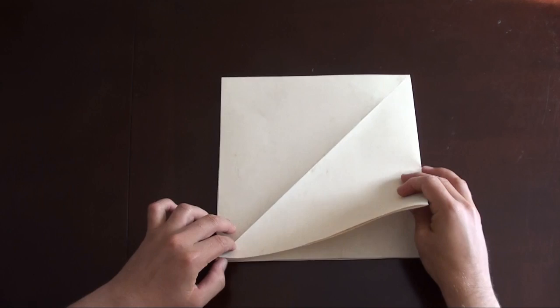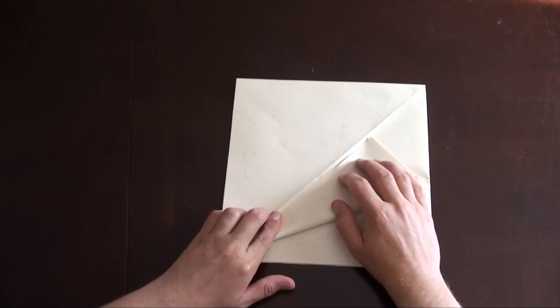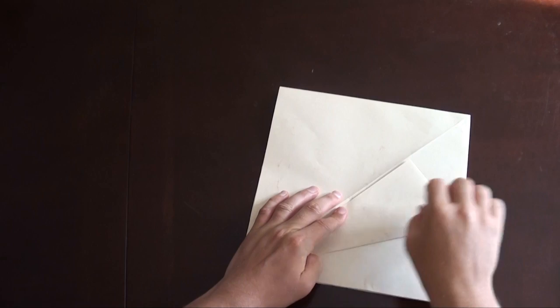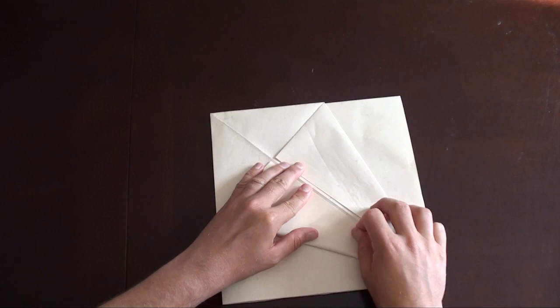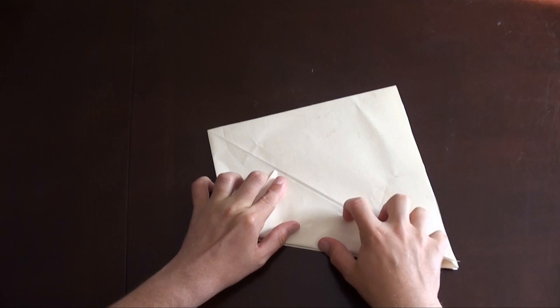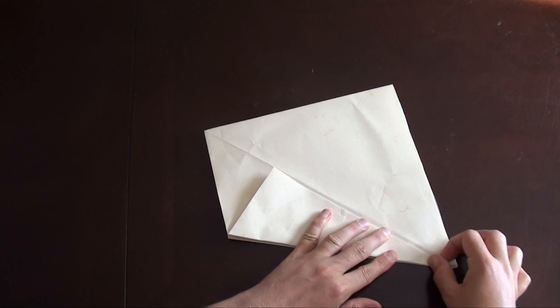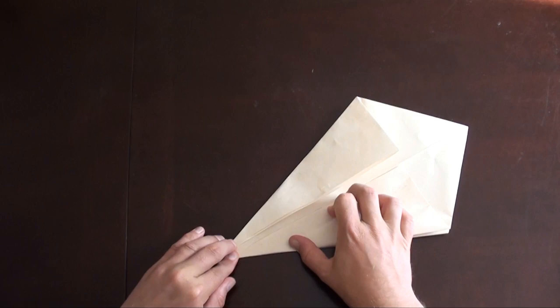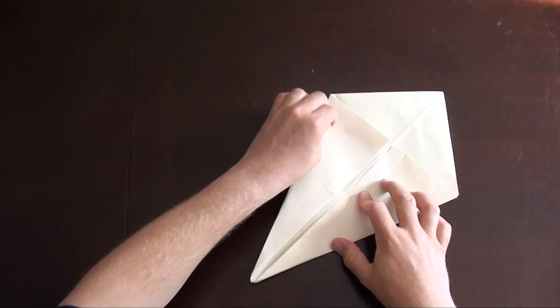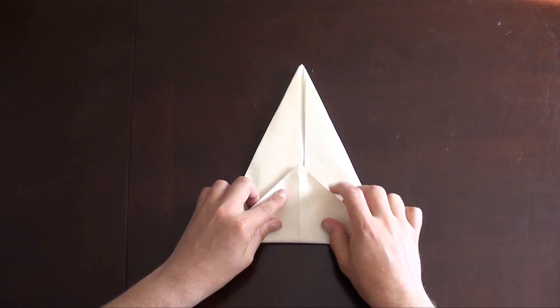All right, now we're going to fold the bird base, but instead of folding it to the crease like this, we're going to fold about a few millimeters away from it, like this. And same thing on all of the flaps. And fold the top. Or now it's the bottom. Fold it up.